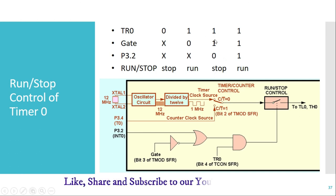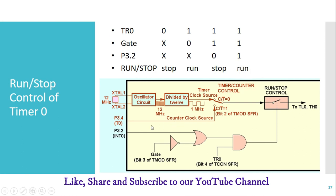If TR0 is 1, Gate is 1, and P3.2 is 0, the timer is controlled by the external signal on pin P3.2 — because Gate is 1, starting or stopping depends on that signal. If P3.2 is 0, the timer stops. If TR0 is 1, Gate is 1, and P3.2 is 1, the timer starts counting. This logic is implemented using logic gates.